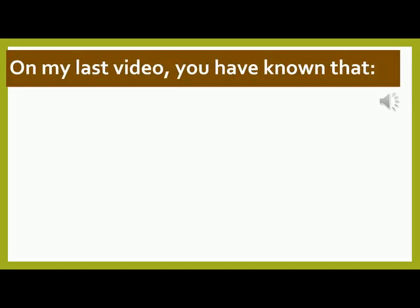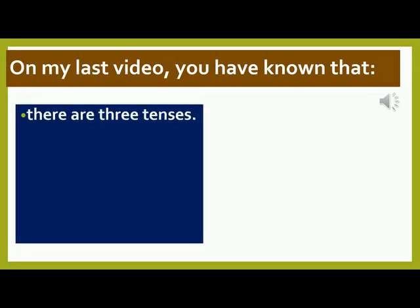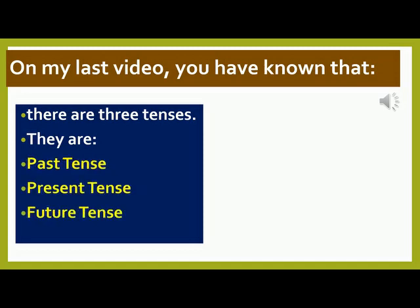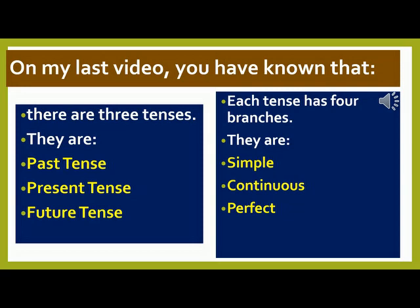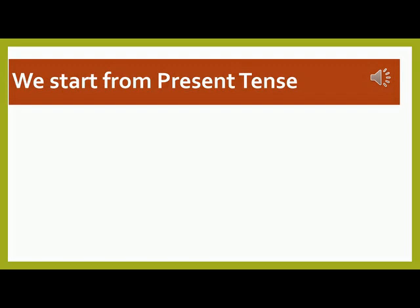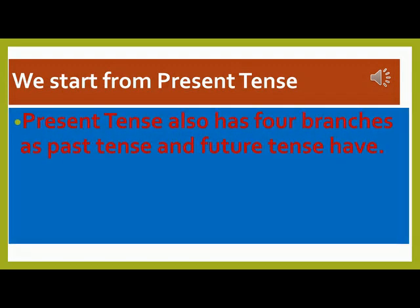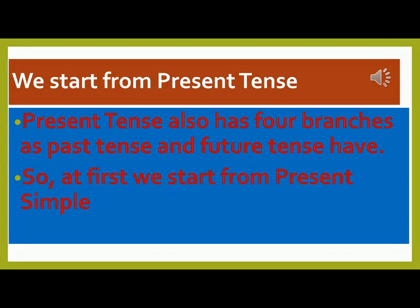On my last video, you have learned that there are three tenses: past tense, present tense, and future tense, and each tense has four branches — simple, continuous, perfect, and perfect continuous. We start from present tense. Present tense also has four branches, just as past tense and future tense have. So at first, we start from present simple tense.